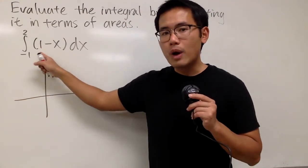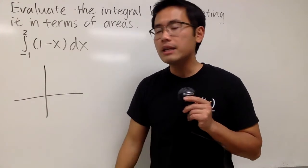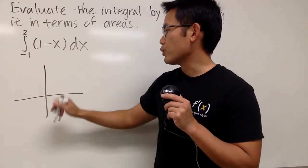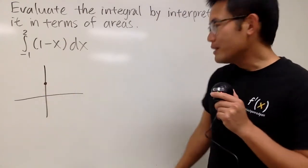Pay attention to this. This is just 1 minus x, and it's just a straight line, right? So what you can do is, if x is equal to 0, we have y value is equal to 1, so we have this right here, namely the y-intercept.